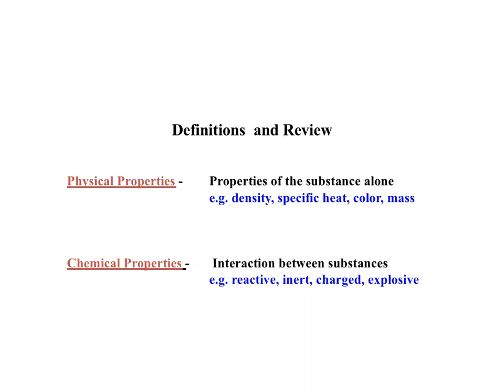Let's start with some definitions in review. Physical properties versus chemical properties is a good start. Physical properties are associated with the substance alone. Several types include density — it doesn't matter how much material you have, the density of the compound or element will be the same. For example, 2 grams versus 5 grams of methane — the density is still the same, defined as mass divided by volume. Specific heat has to do with raising the temperature of a substance by adding heat. Color and mass are also physical properties.